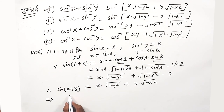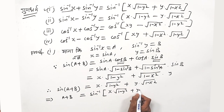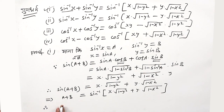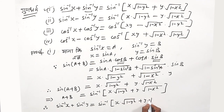This implies a+b = sin⁻¹[x·√(1−y²) + y·√(1−x²)]. Since a = sin⁻¹x and b = sin⁻¹y, therefore: sin⁻¹x + sin⁻¹y = sin⁻¹[x·√(1−y²) + y·√(1−x²)]. In this way, children, you can prove it.